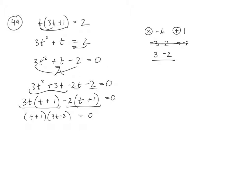Finally, since I have this t + 1 times this equals 0, one of them has to be 0. So t + 1 = 0, or 3t - 2 = 0. And then solve each equation. I'll subtract 1 from each side there, so this t will be equal to a negative 1.